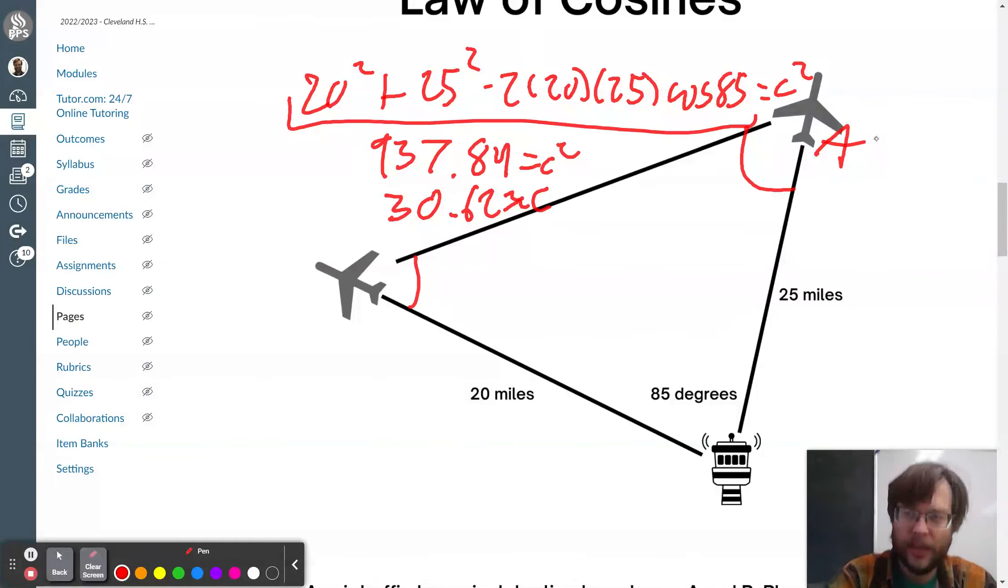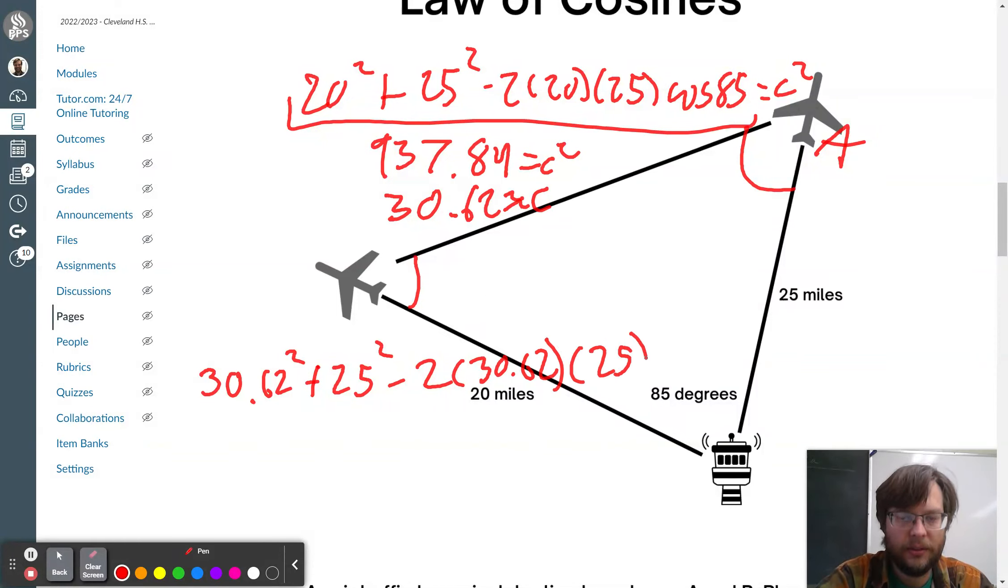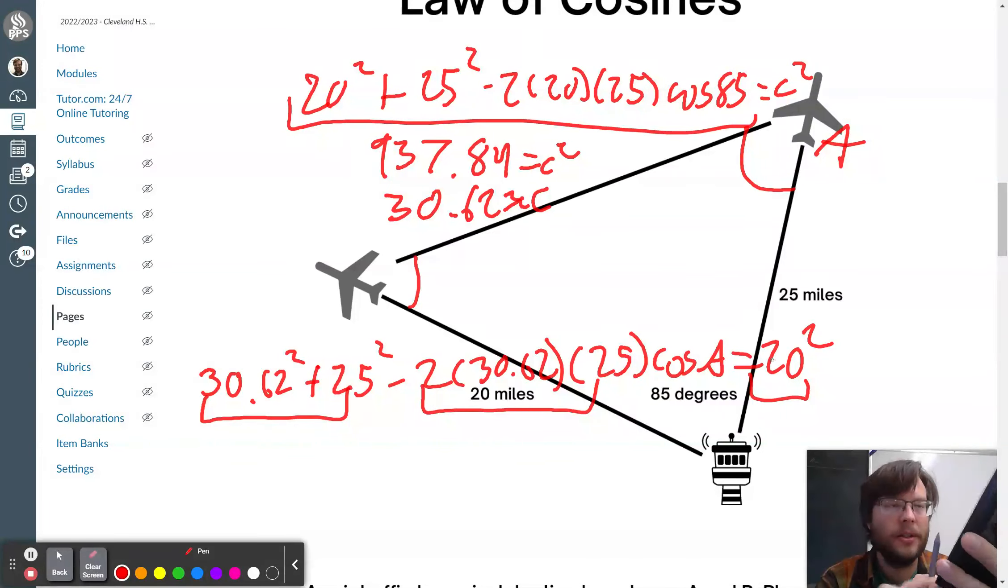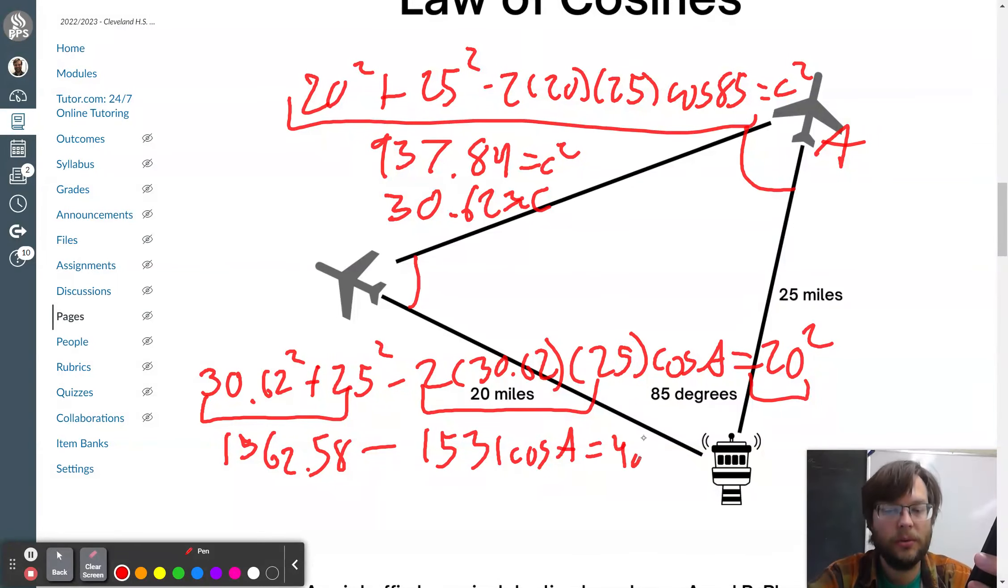So, let's call this angle A here. So, then I know that for angle A, I'm going to use the other two sides around it. So, I'm going to say 30.62 squared plus 25 squared minus 2 times 30.62 times 25 cosine of angle A equals 20 squared. So, we've got kind of three different chunks of calculation. 30.62 squared plus 25 squared. This first chunk becomes 1562.58.